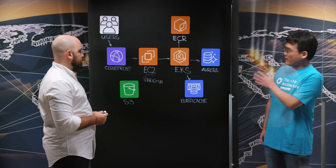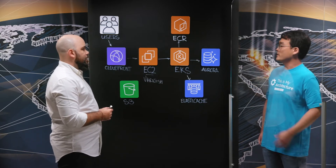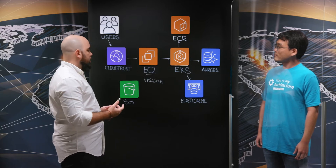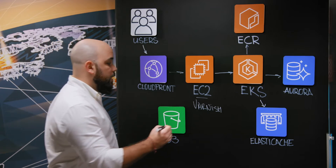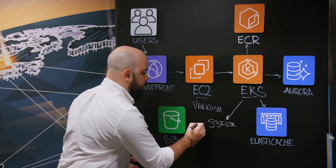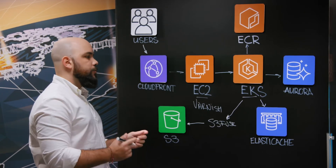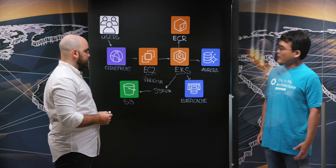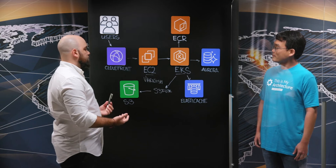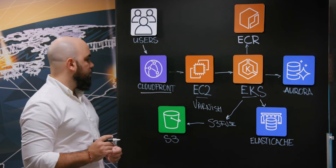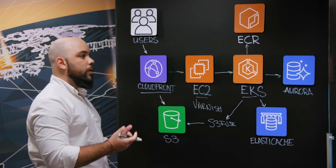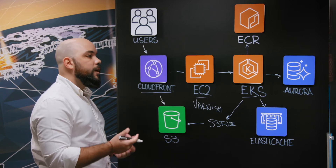I see S3 on the left corner of the diagram — what role does S3 play? When we started migrating, the current version of Magento wasn't natively supporting S3. So we use a service called S3Fuse to mount an S3 bucket inside our instances as part of the file system. All the content going to S3 is then served by CloudFront, making it faster for users all around the world.